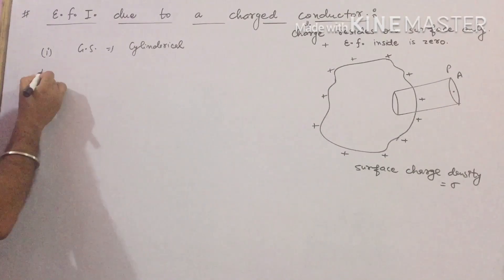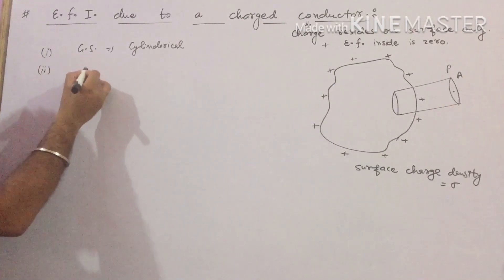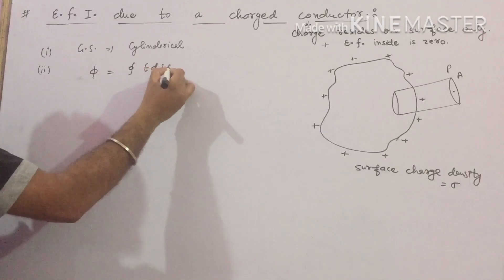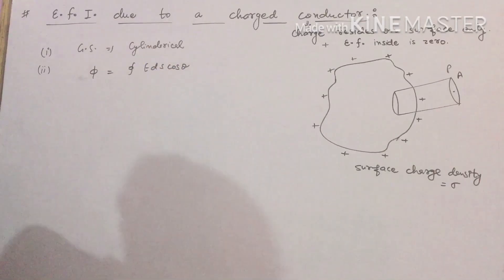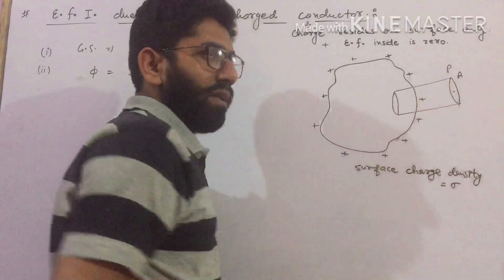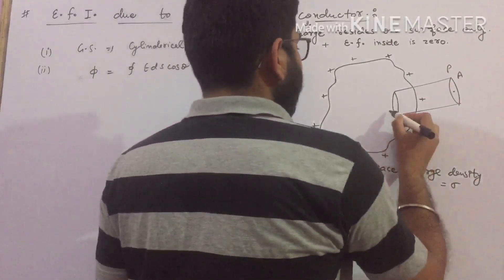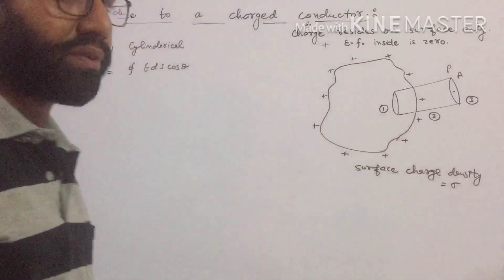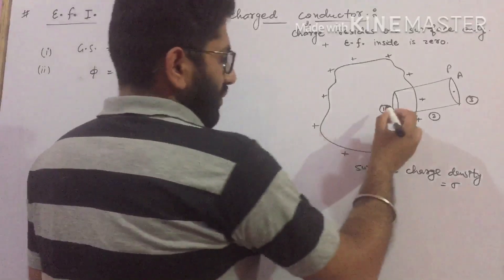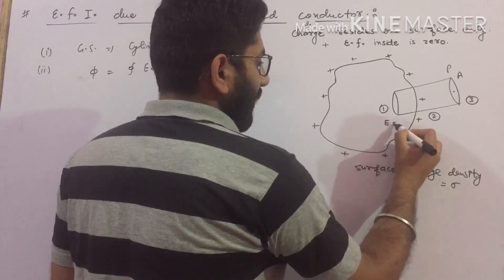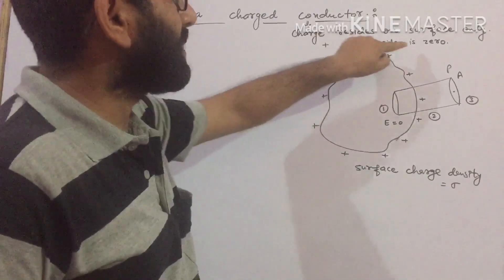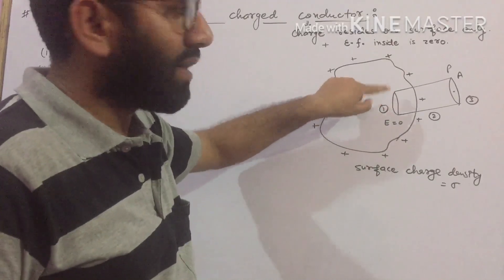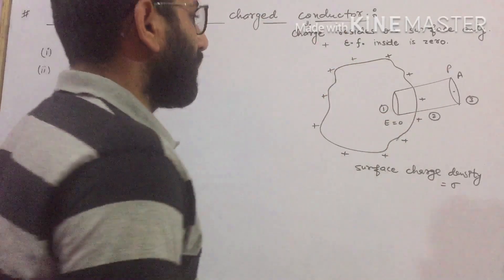The second step is to find the flux, which is the integral of E·dS·cos(theta). This is the third time we have chosen a cylindrical Gaussian surface, so we are familiar with how to find flux in this case. For surface one, the electric field is zero since it lies inside the conductor, so the flux through that part is also zero.